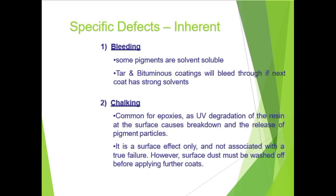Bleeding: some pigments are soluble; tar, bituminous coatings will bleed through if the next coat has a strong solvent. Chalking is common from UV degradation of the resin at the surface, causing breakdown and release of pigment particles. It is a surface effect only and not associated with true failure. However, surface dust must be washed off before applying the next coat — after priming is completed and the primer has dried, clean the dust, then apply the topcoat.